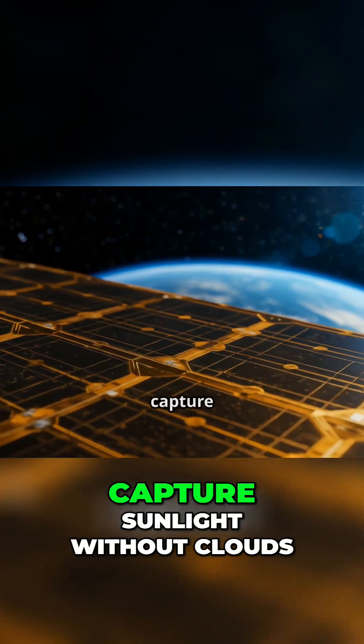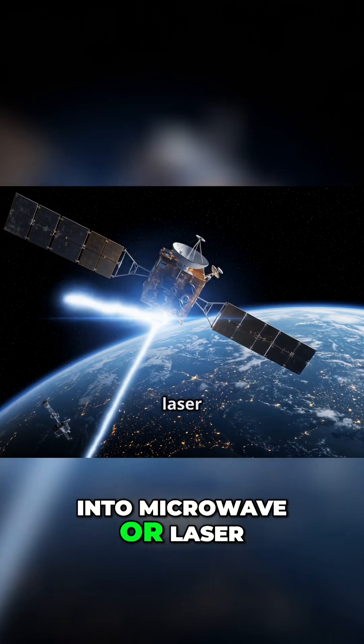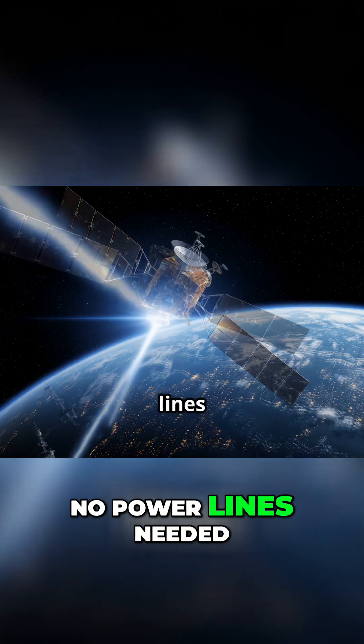Solar panels on satellites capture sunlight without clouds or weather. They turn that energy into microwave or laser beams and send it straight down to Earth. No power lines needed.